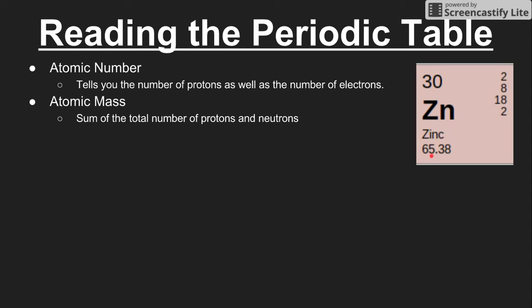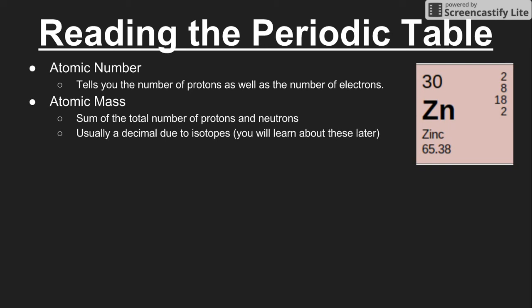The tricky part is there's a decimal point involved. This confuses people because if the atomic mass is the sum of protons and neutrons, you might wonder if there are 0.3 protons or neutrons somewhere — and that's not the case. In order for this number to make sense, we have to talk about a concept called isotopes, which we'll cover as we work through the chapter. Most atomic masses are decimals, though a few on the periodic table are whole numbers.